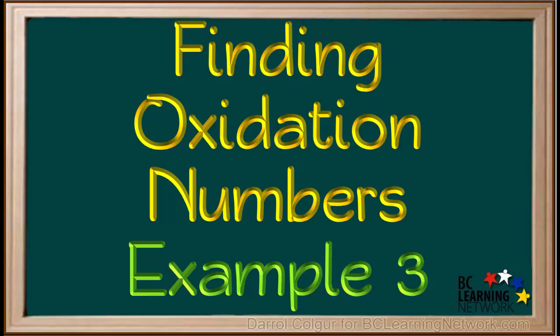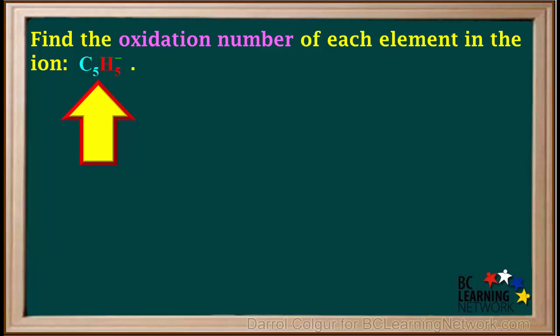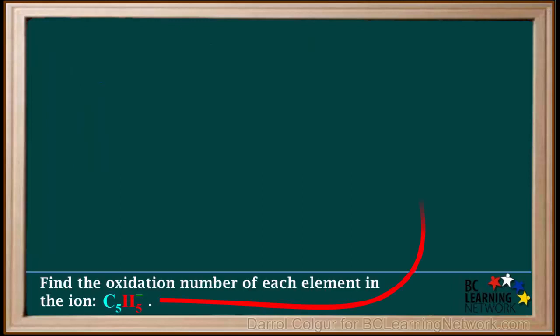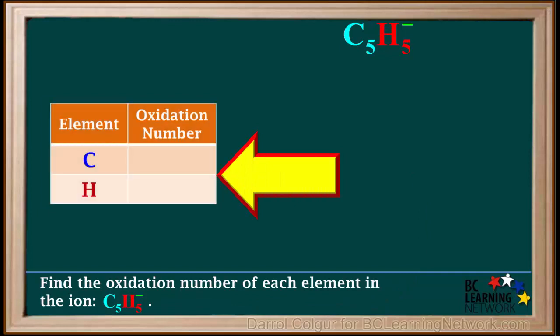Here we'll go through another example of finding the oxidation number of each element in a polyatomic ion. We're asked to find the oxidation number of each element in the ion with the formula C5H5-. We'll start by writing the formula up here and a table here for oxidation numbers of each element.